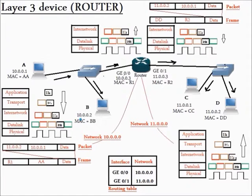So the data will be sent from the data link to the physical layer. The physical layer converts the data into an electrical signal and sends it over the cable, so the data will reach the hub. The hub will flood the data out of all its ports, so the data will reach the router's interface Gigabit Ethernet 0/0.